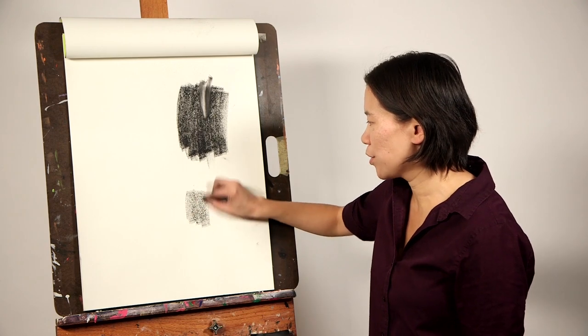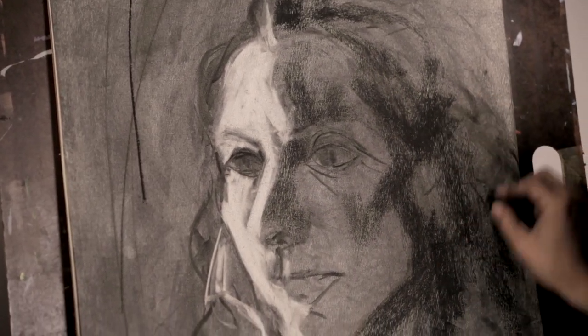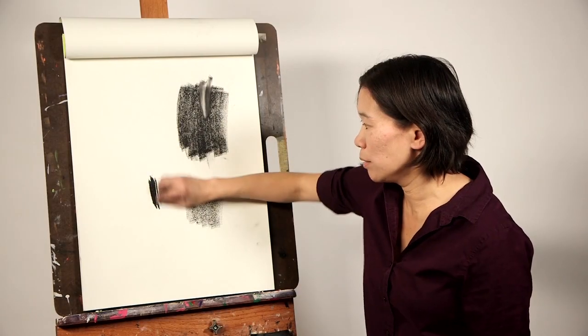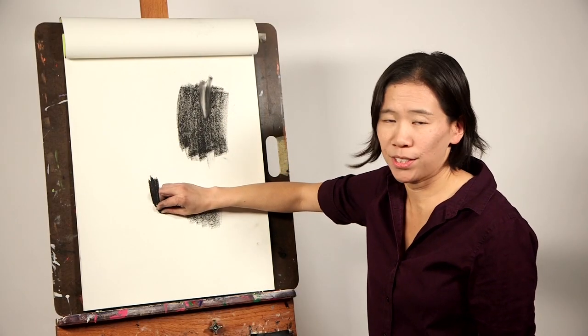when you first start drawing with the compressed charcoal, you want to press hard enough that you can visibly see the tone, but you don't want to press down to a pure solid black like this, which would be very difficult to erase.